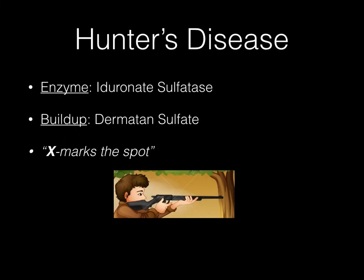Hunter's disease and Hurler's disease both have the same buildup: dermatan sulfate. The difference is in the enzyme — Hunter's uses iduronate sulfatase, while Hurler's uses L-iduronidase; the L in Hurler's clues you into the enzyme. High yield: Hunter's disease is X-linked — mnemonic 'X marks the spot,' like a hunter aiming at a target. Also, touching the rifle to your eye reminds you of dermatan sulfate touching skin. Crucially, Hunter's has no corneal clouding, whereas Hurler's does — a hunter needs clear vision to hunt.